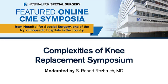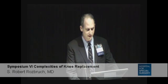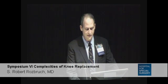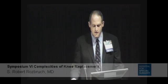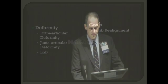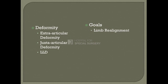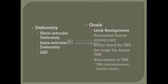Deformity can be extra-articular deformity, juxta-articular deformity, and leg length discrepancy. The goals I'm trying to address are limb realignment to normalize the forces across the knee joint, perhaps delay the need for knee replacement, but importantly, in this group of patients with arthrosis, set the stage for total knee replacement rather than compromise it. And in some cases, it's going to be an alternative to knee replacement, either because knee replacement is contraindicated or sometimes patients really just don't want the arthroplasty.